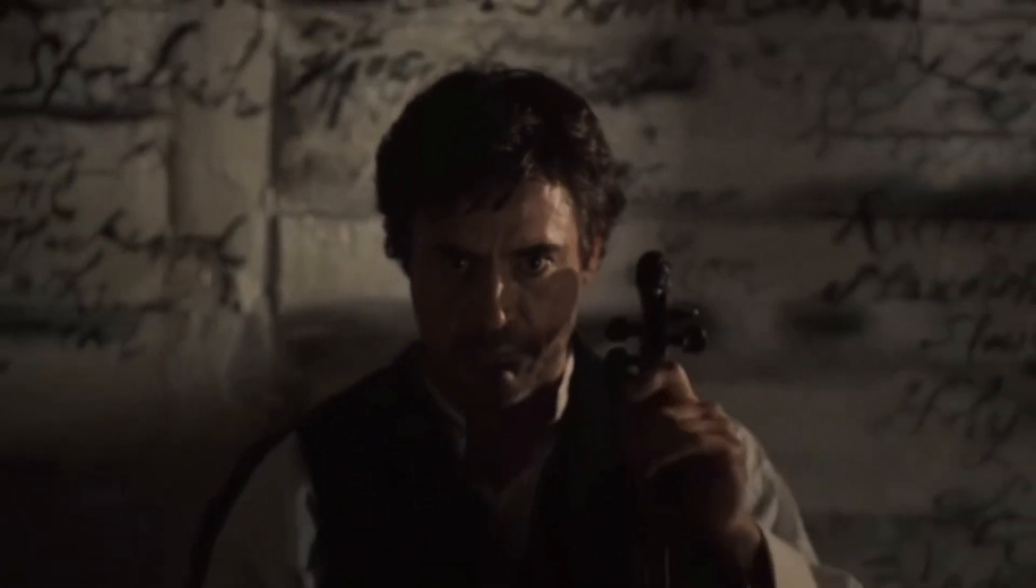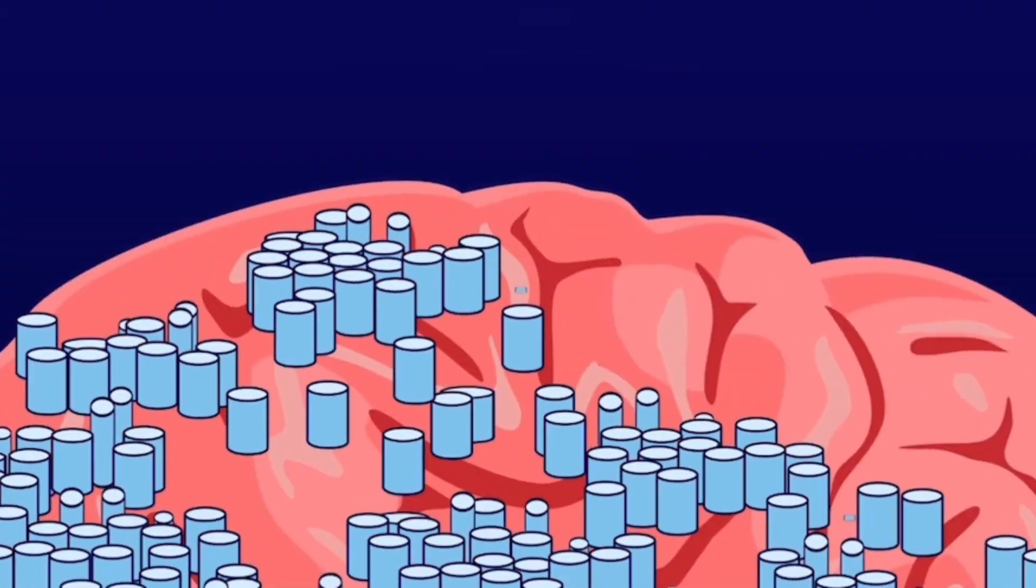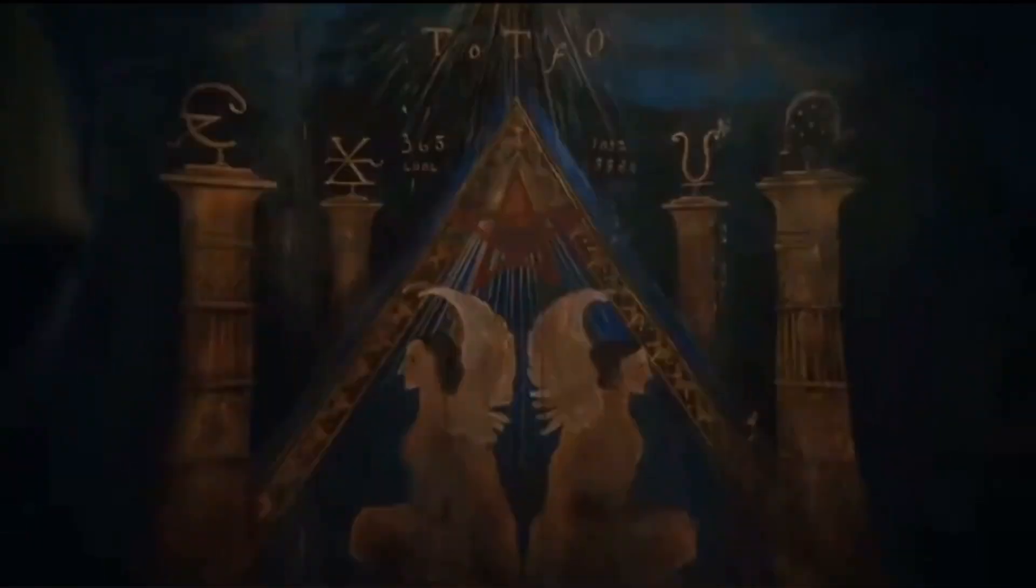When you are thinking or contemplating, all of those thoughts aren't coming from one brain. Thousands of tiny brains, the cortical columns, are referencing their models and electing one outcome or prediction.